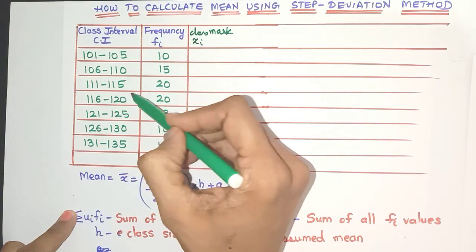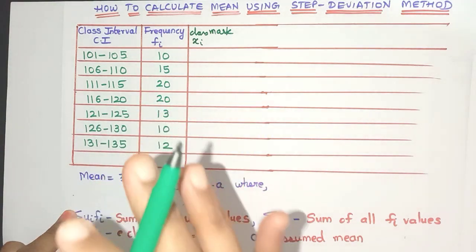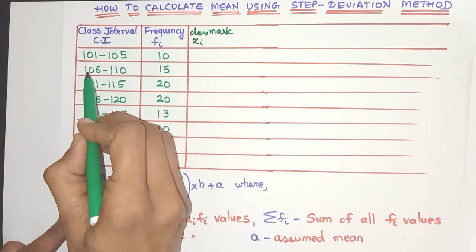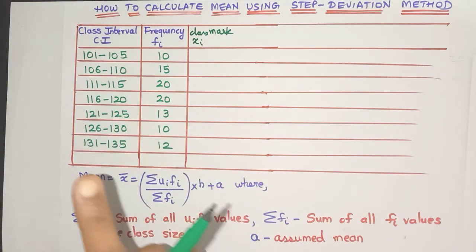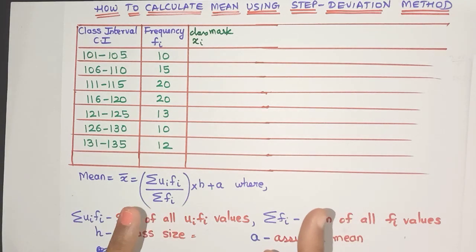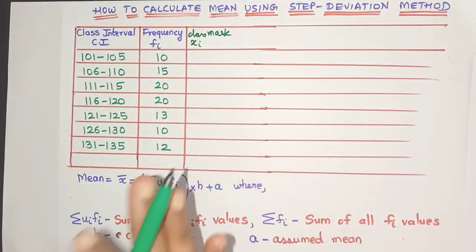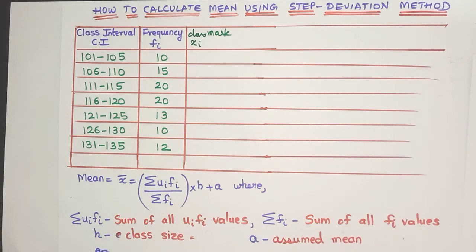Now friends, did you observe that this class interval is nothing but the inclusive class interval? Because see, there is a gap between the upper limit and the lower limit. So do we have to convert it to exclusive class interval? Well, if you're only calculating the mean, there is no need to convert it to exclusive. Even if you convert it, you are going to get the same answer.